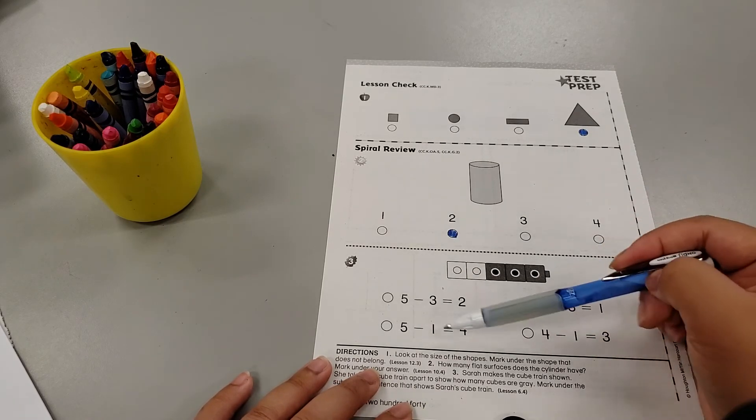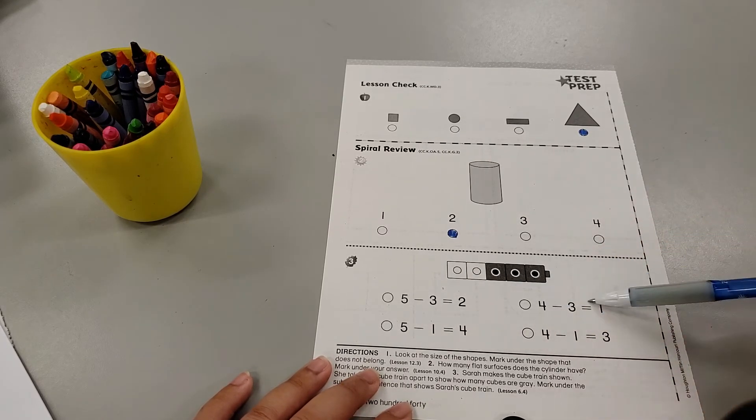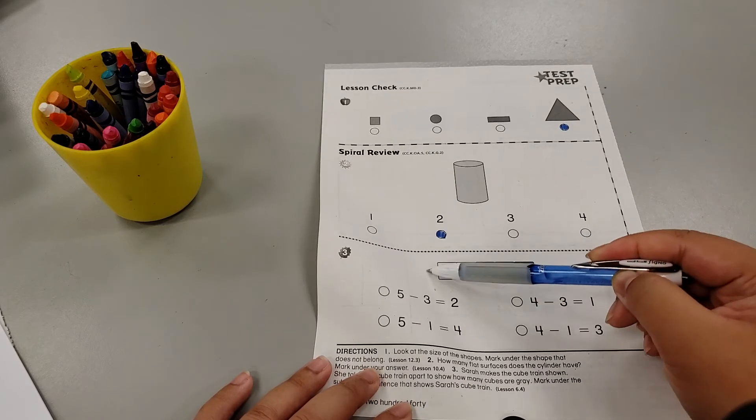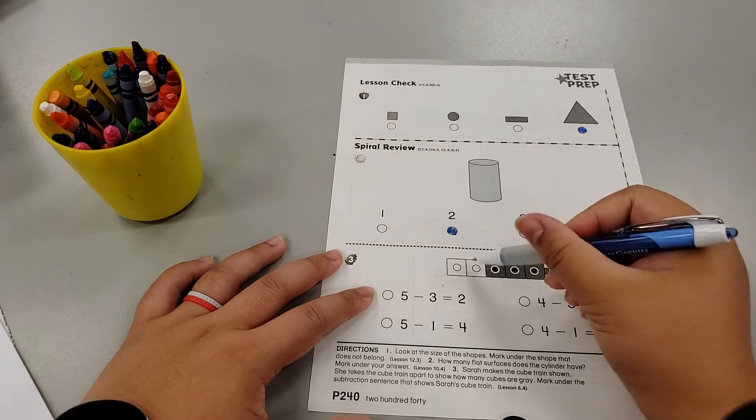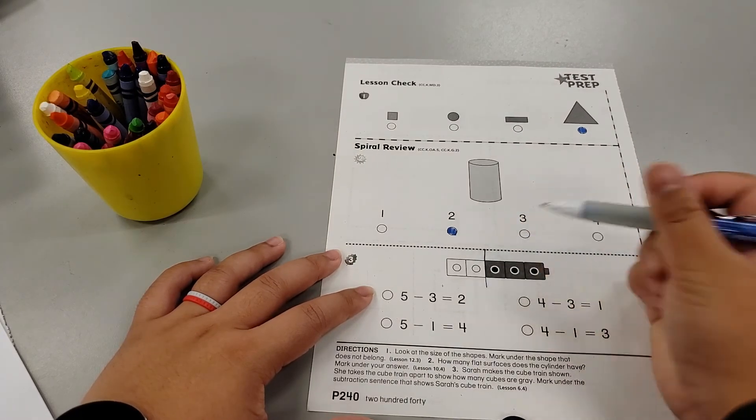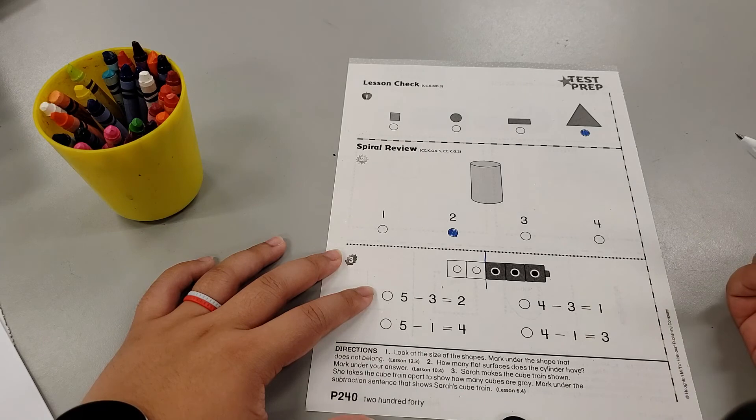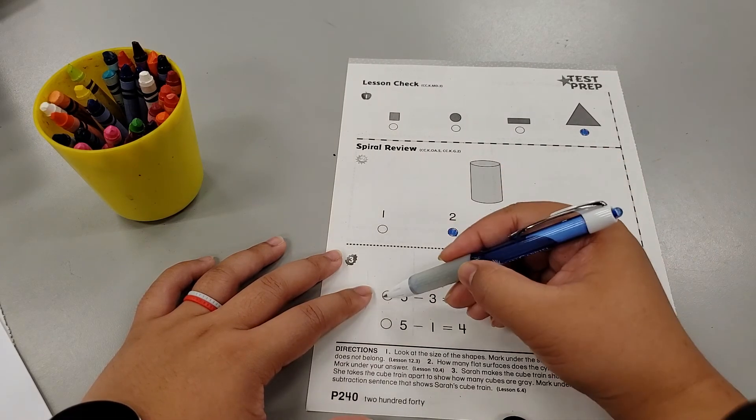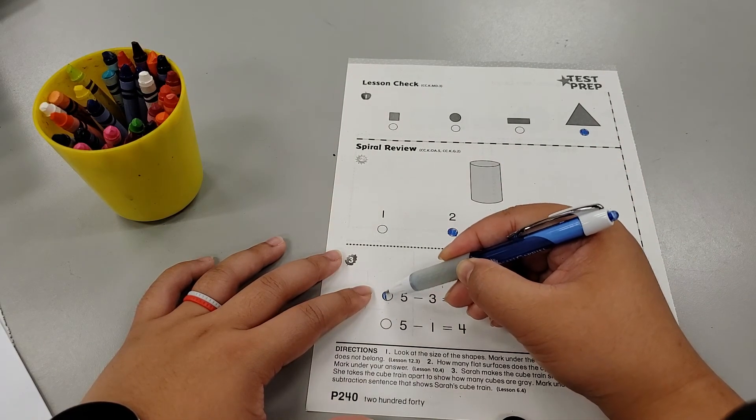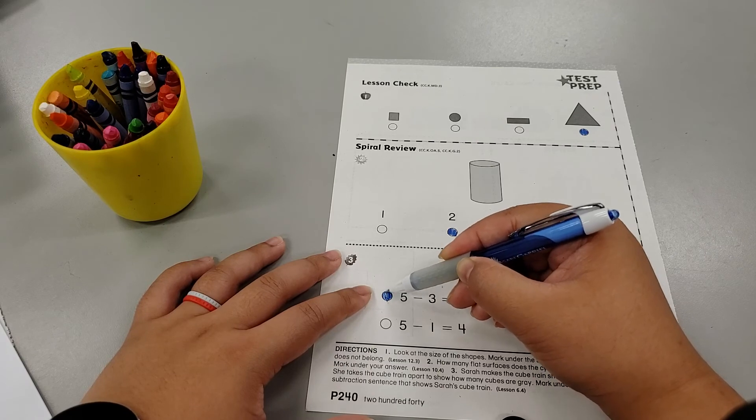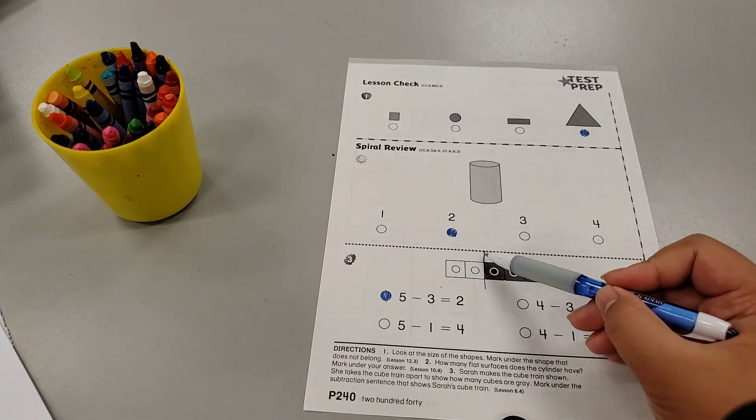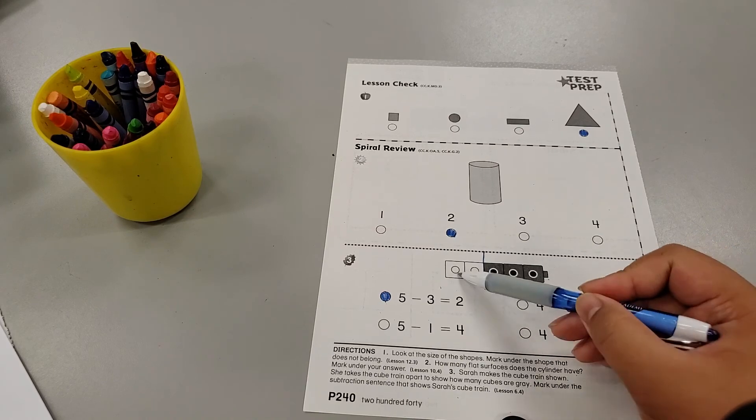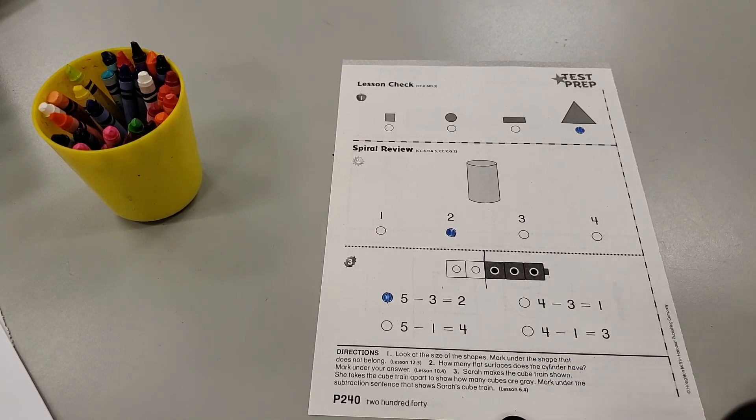So which math sentence shows that there is a cube train of five that have taken apart three and two? That's right over here, my dear friends. That is how you would take apart your cube train to show subtraction.